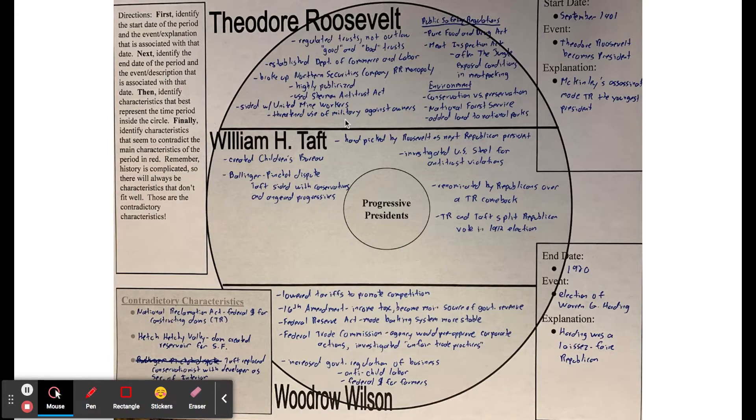Think about how this contrasts with things like the Pullman strike and the Homestead strike, where the military was used against the workers. This was a different sort of thing. He was the first president to really side with labor in any kind of way. He talked about this idea of a square deal, basically being fair to both sides.